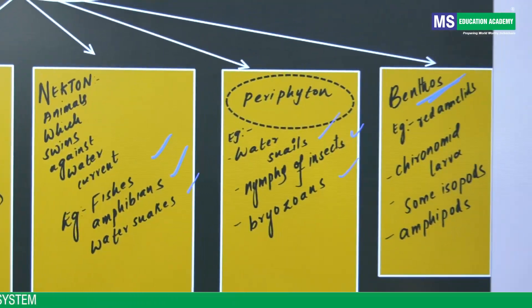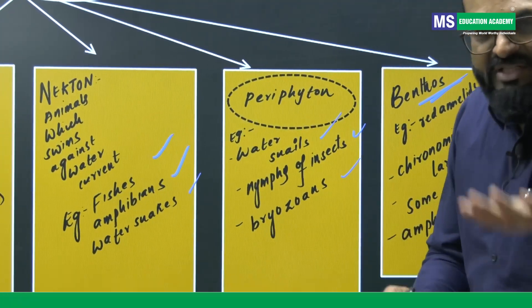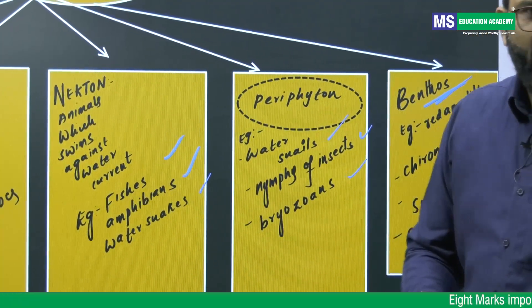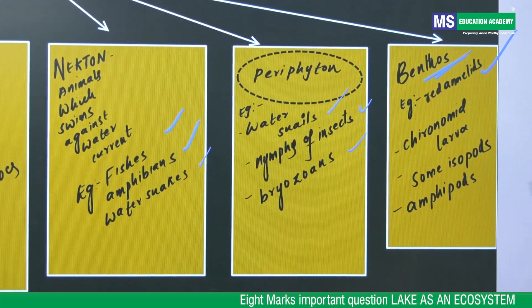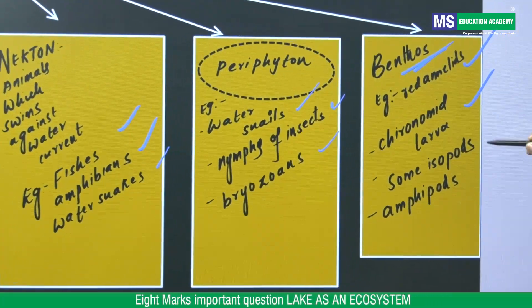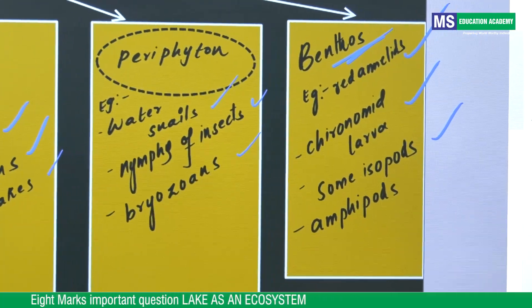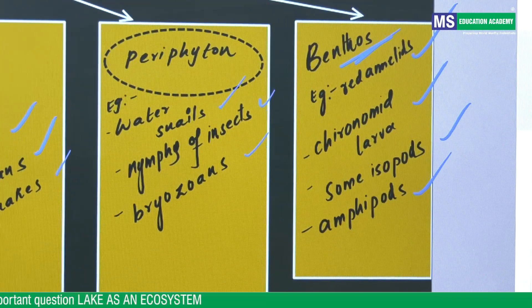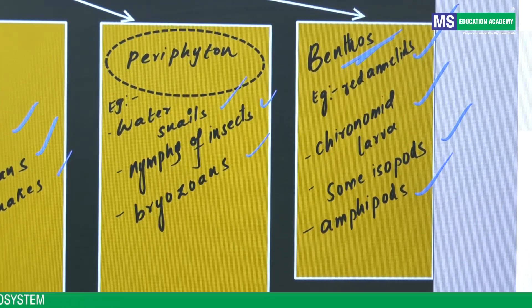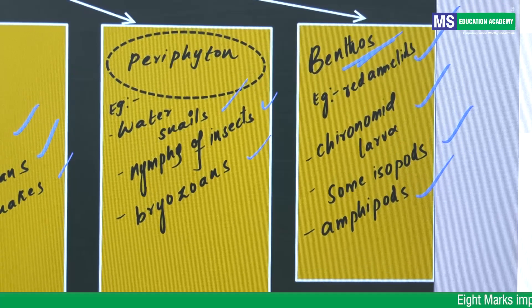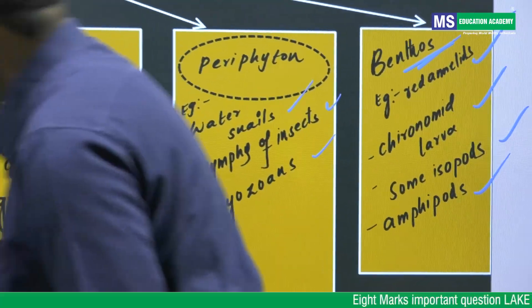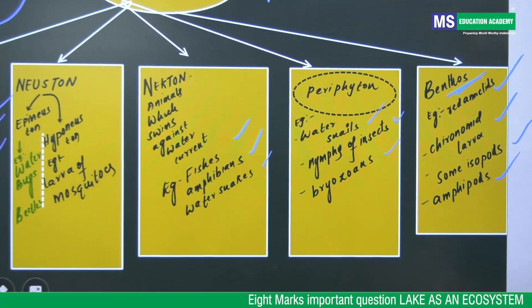Now coming to benthos. Animals which lives in the bottom are called benthos. Example, red annelids, chironomid larva, some isopods, amphipods. Red annelids, chironomid larvae, some isopods and amphipods. So that's about consumers.